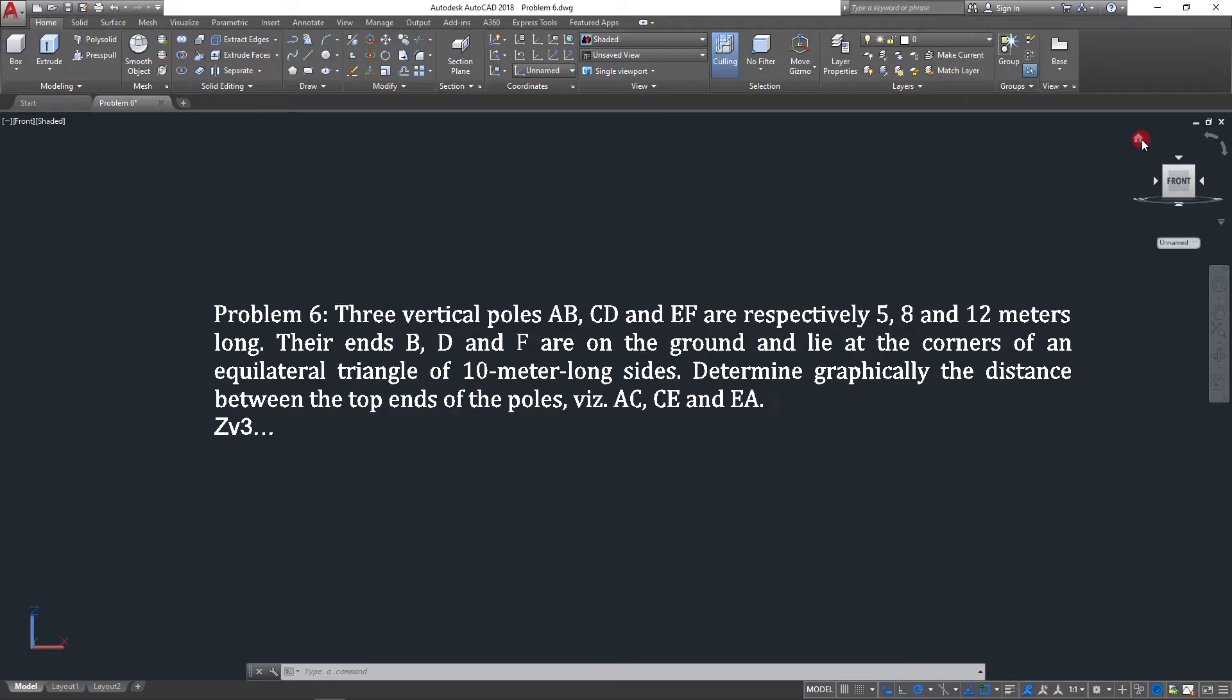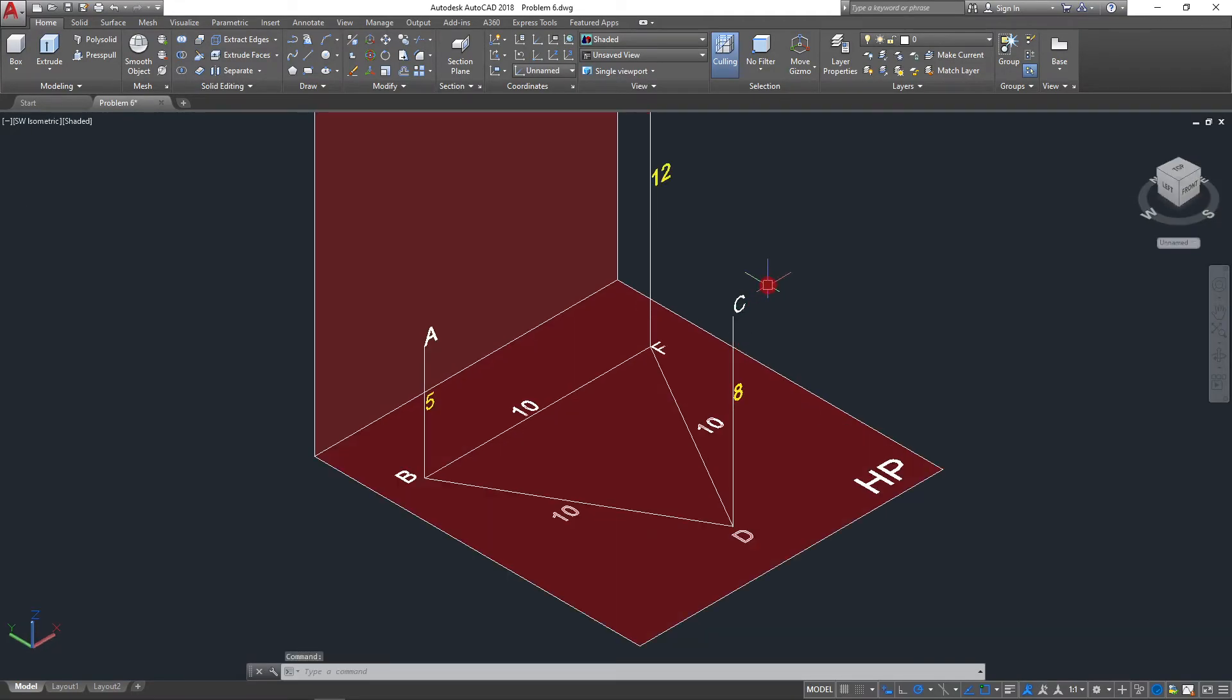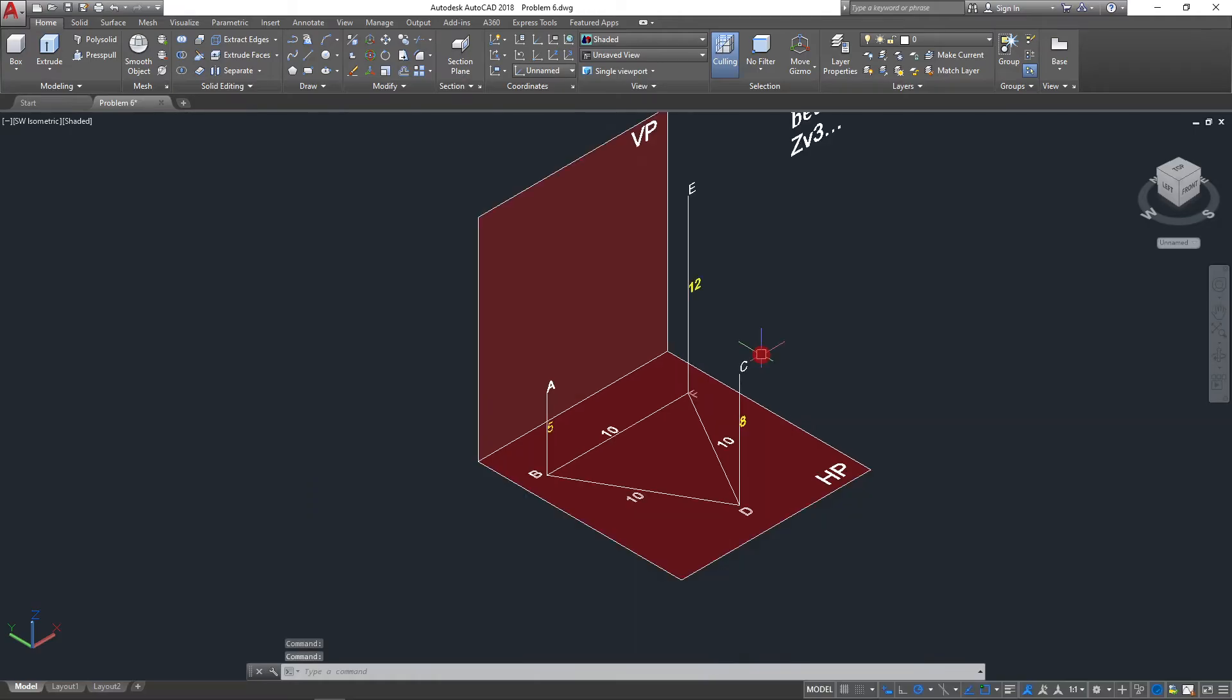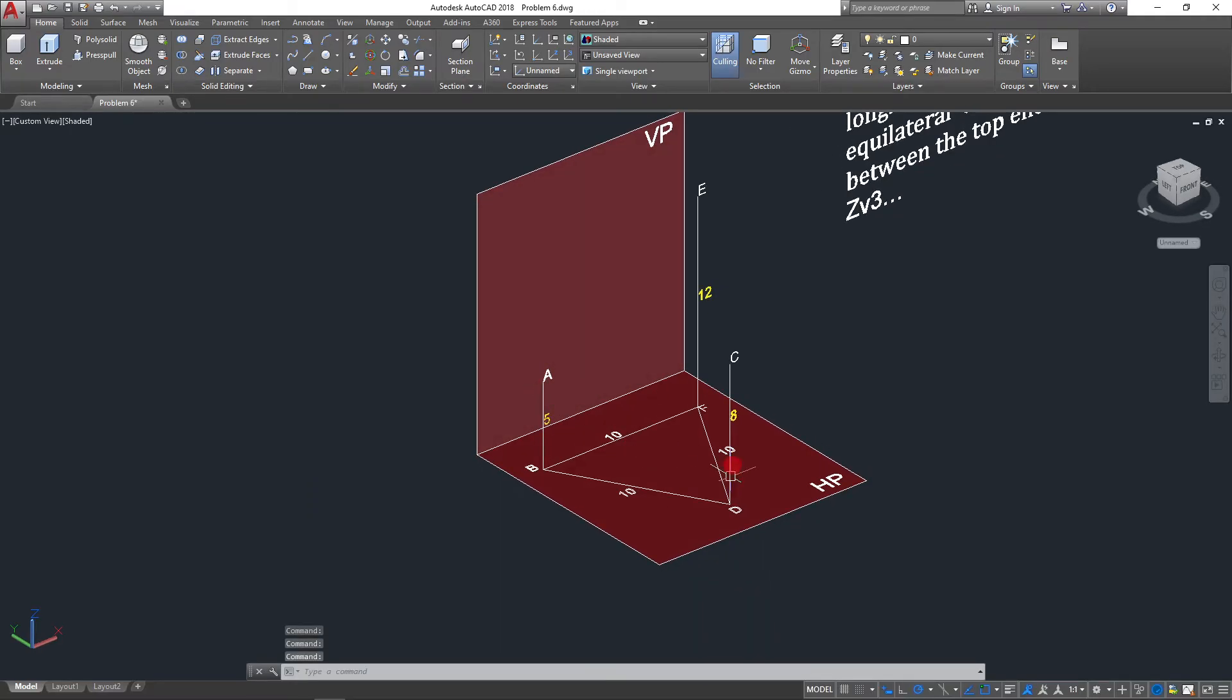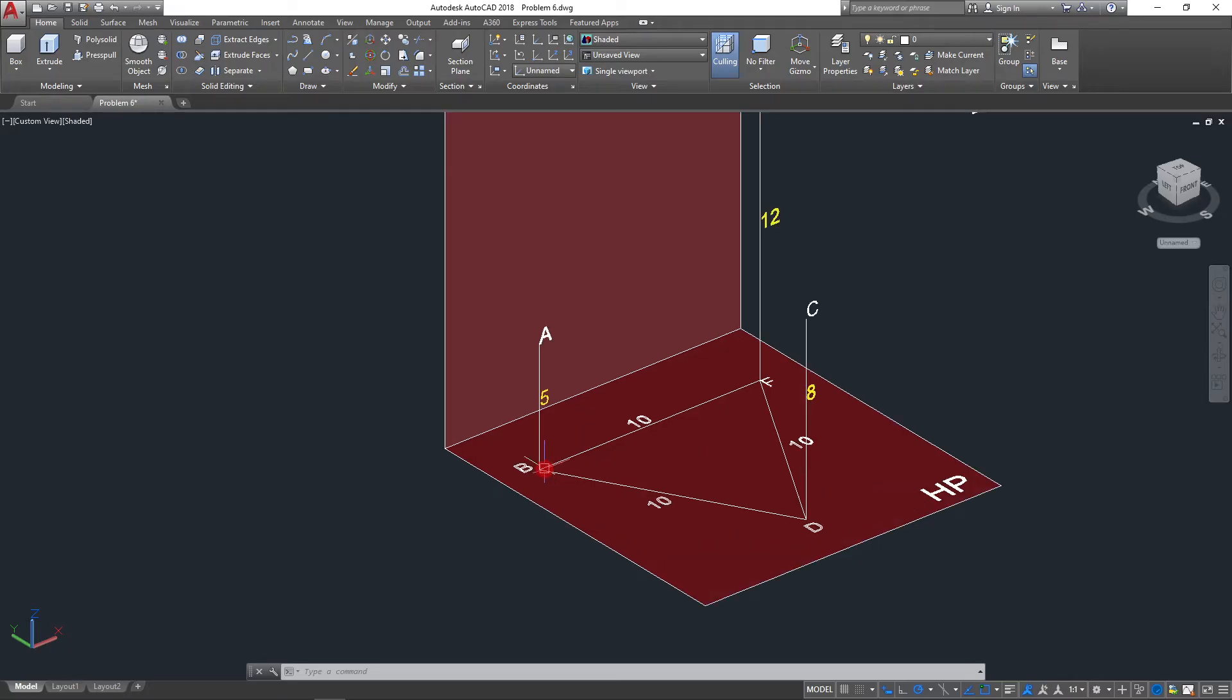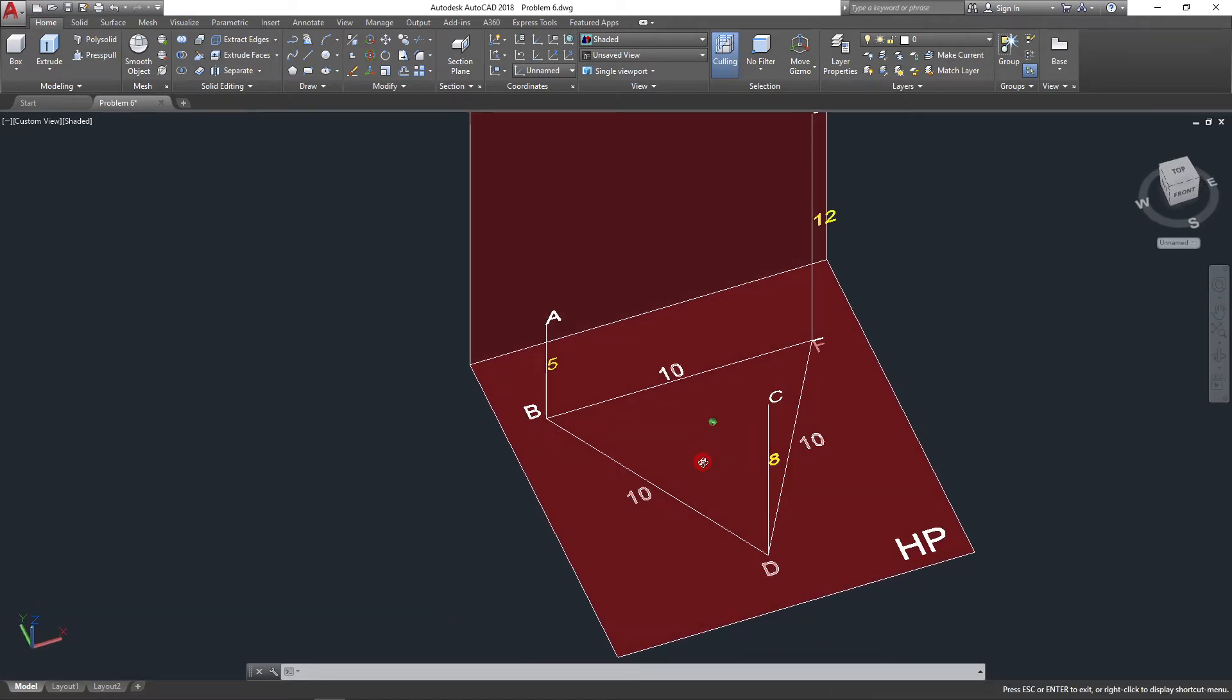Now this is going to be fun. Watch. Here we go, this is the arrangement. These are the three poles: AB five meter long, you can see this, then there is CD eight meter long, and then you have EF 12 meters long. The bottom of all the poles, that is B, D, and F, when joined with the help of lines, they sort of make an equilateral triangle.